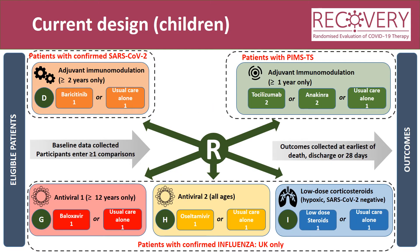This slide gives an overview of the current options available within the recovery trial. As recovery is an adaptive design, there are changes being made to the protocol all the time, so please check the current version of the protocol and which options are available in your centre. For those children with confirmed SARS-CoV-2, the options are baricitinib or usual care alone in a one-to-one randomisation. For those patients with PIMS-TS, the options are tocilizumab, anakinra and usual care alone in a two-to-two-to-one randomisation. For those children with confirmed influenza — UK only — please only recruit to flu once authorised by the coordinating centre. There are three randomisations open: antiviral treatment with baloxavir or usual care alone; oseltamivir or usual care alone; or low-dose steroids only open for hypoxic SARS-CoV-2 negative children, each in a one-to-one randomisation.